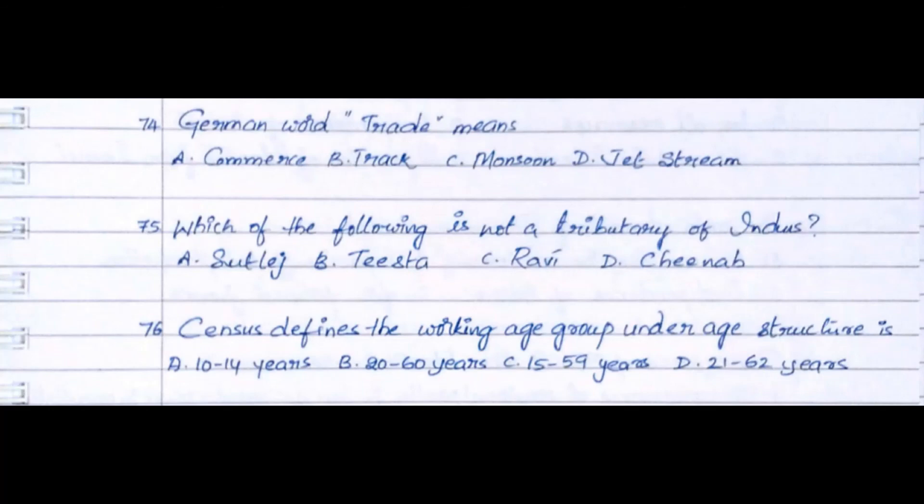Question 75: Which of the following is not a tributary of Indus? Option A. Sutlej, Option B. Tista, Option C. Ravi, Option D. Chenab. The answer is Option B. Tista.